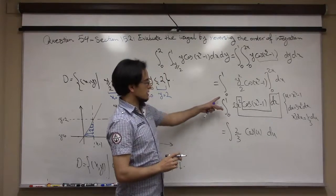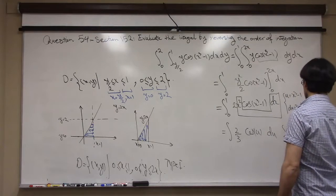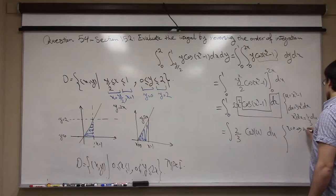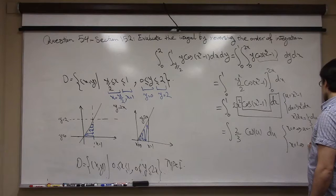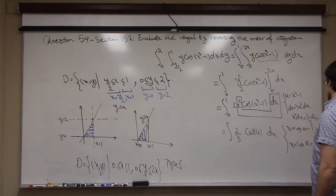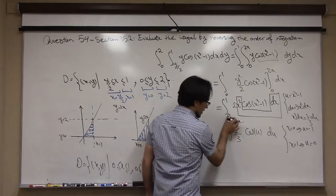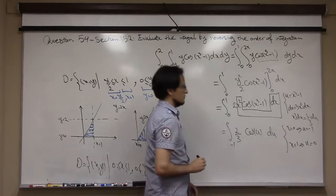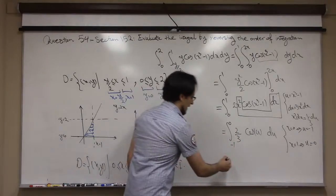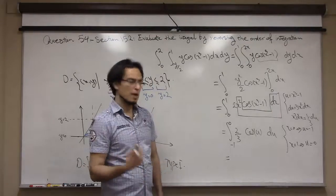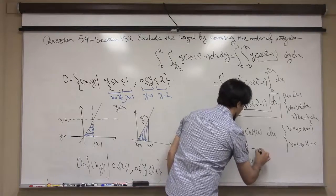Substituting, the integral becomes (2/3) times the integral of cos(u) du. I also change the boundaries: when x = 0, u = −1; when x = 1, u = 0. So the integral is (2/3) integral from −1 to 0 of cos(u) du, and the antiderivative of cos(u) is sin(u), giving (2/3) sin(u) evaluated from −1 to 0.